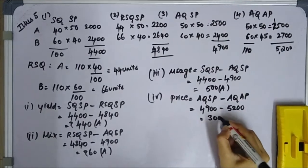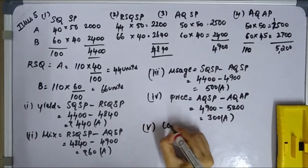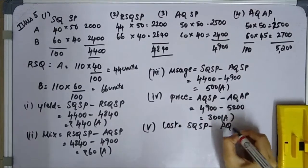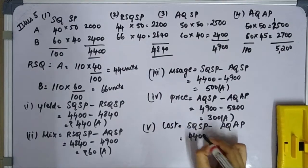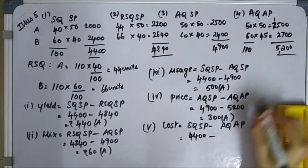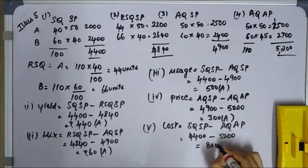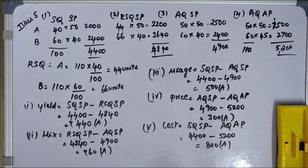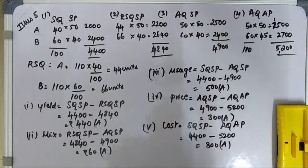Last variance: Material Cost Variance = SQ×SP minus AQ×AP = 4,400 minus 5,200 = 800 rupees Adverse. That's it, guys — Illustration 5 is complete.